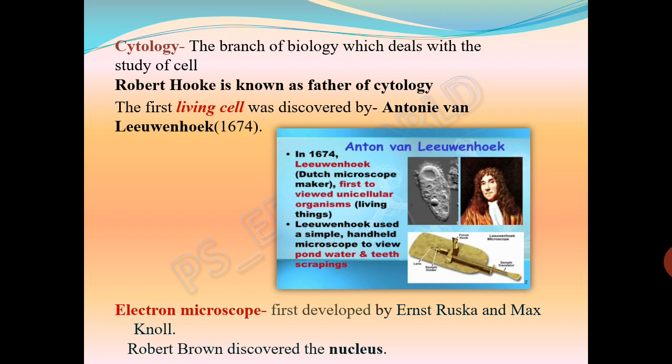The branch of biology which deals with the study of the cell is known as cytology. Robert Hooke is known as the father of cytology. The first living cell was discovered by Antonie van Leeuwenhoek in the year 1674. Robert Hooke discovered dead cells, but the first living cell was discovered by Leeuwenhoek — he discovered living cells in pond water. He was a master microscope maker. So, if the question asks who discovered the cell, write Robert Hooke; who discovered the first living cell, write Antonie van Leeuwenhoek.